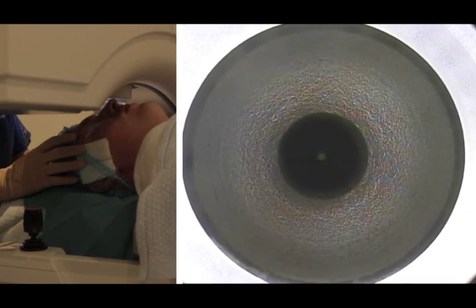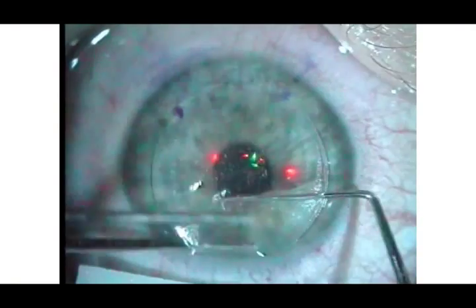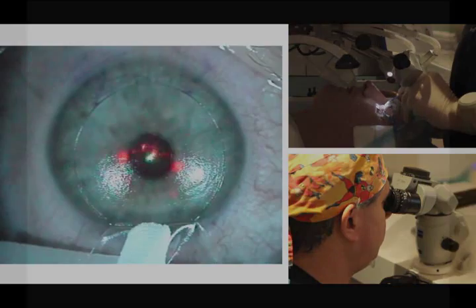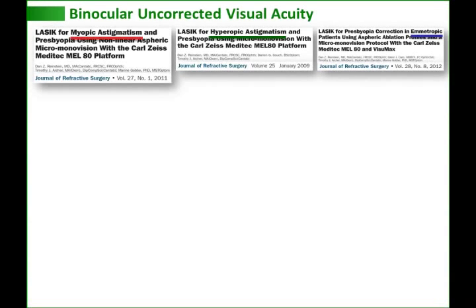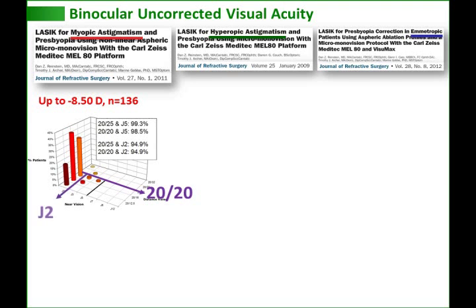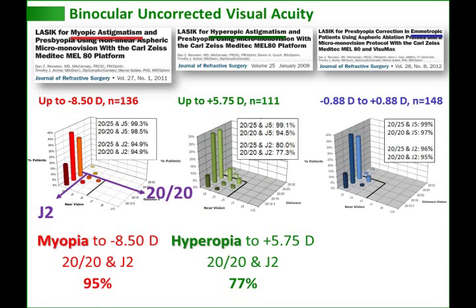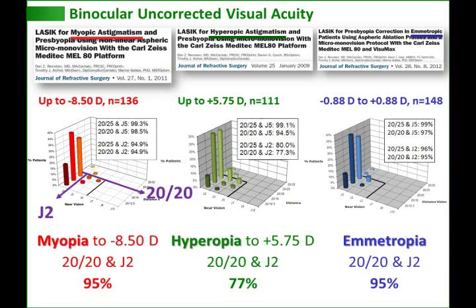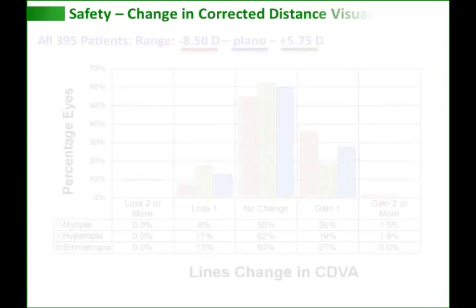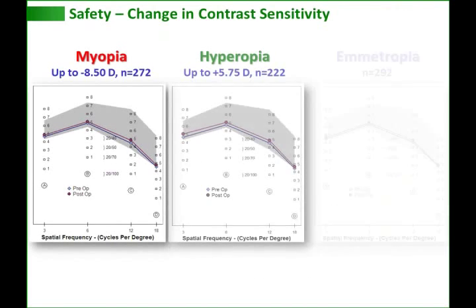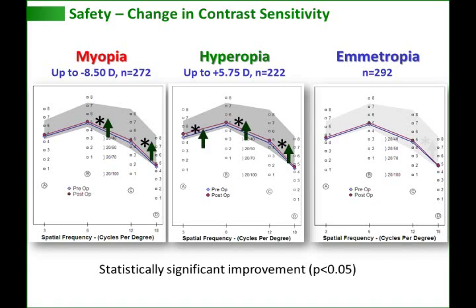Modified mono-vision is performed as a standard LASIK procedure with a wide range of refractions that can be corrected simultaneously. Published results reported at one year post-op show that binocular uncorrected vision was 20/20 or better at distance and J2 or better at near in 95% of myopic patients, 77% of hyperopic patients, and 95% of emmetropic patients. No eyes lost more than one line of corrected distance visual acuity, and contrast sensitivity was either the same or better than preoperatively.